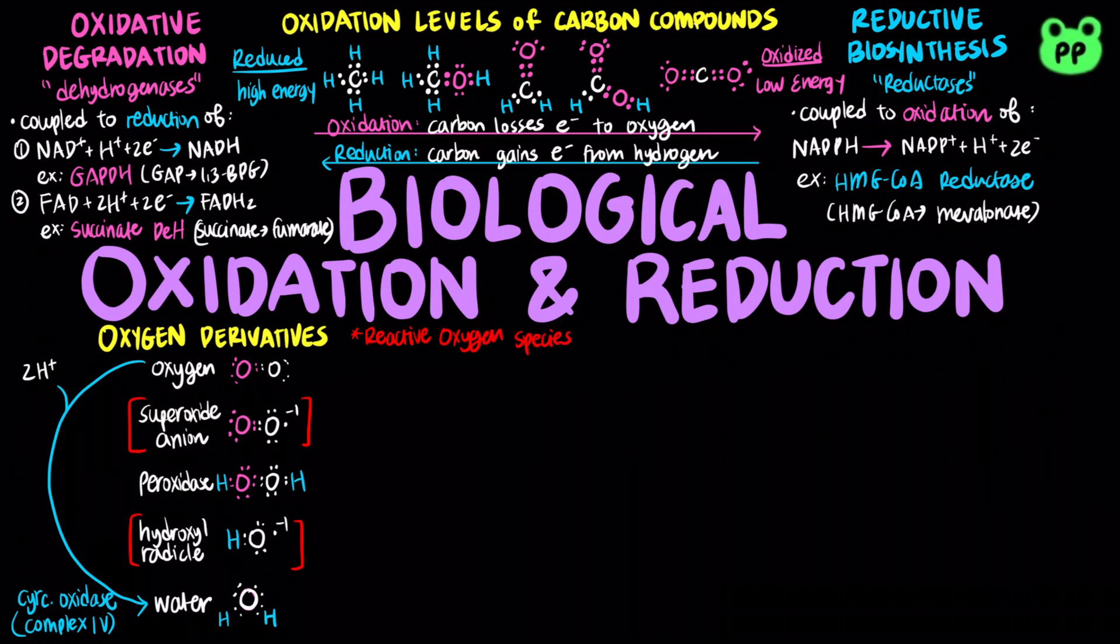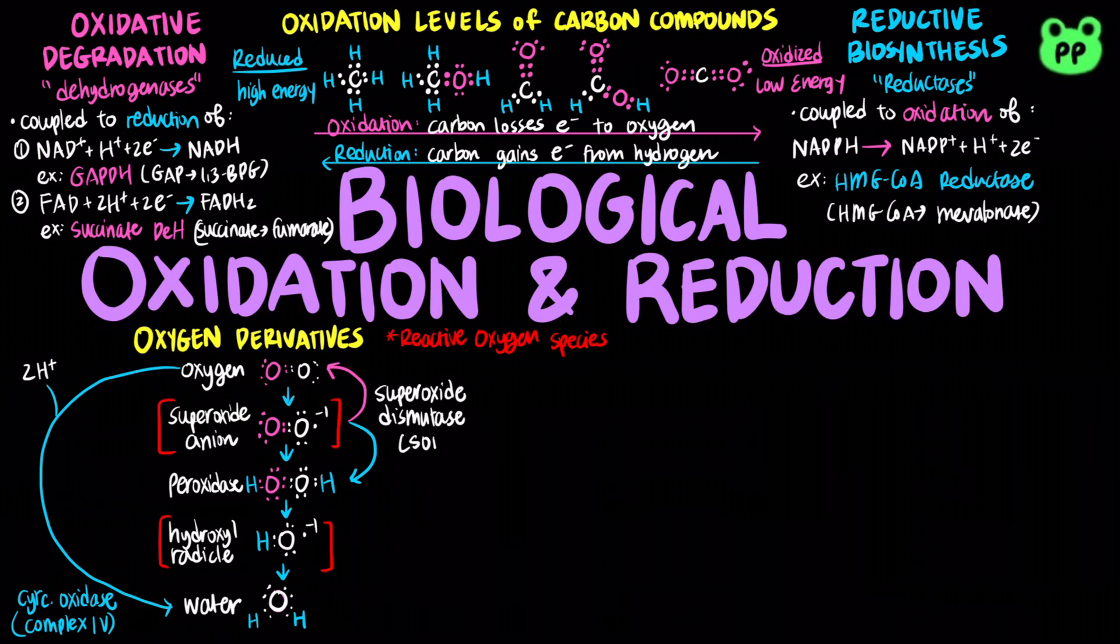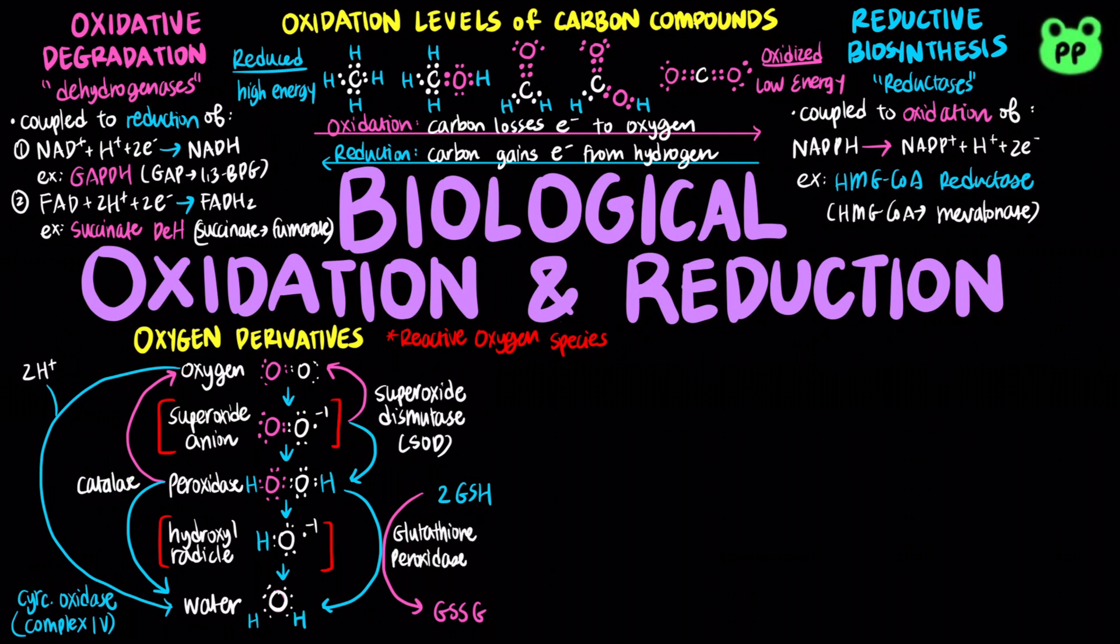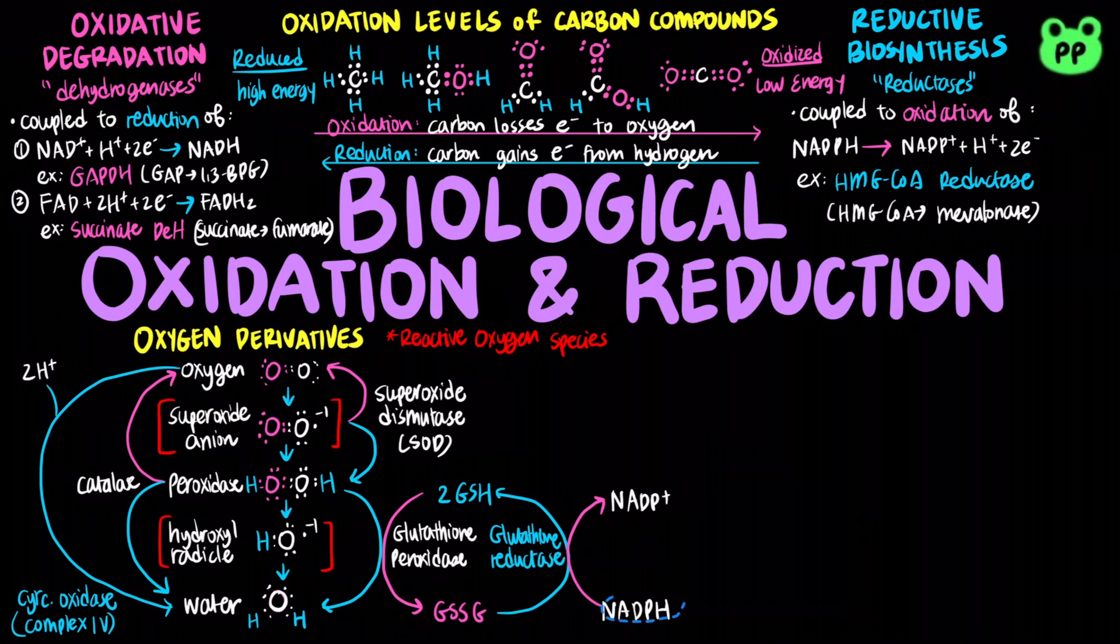During normal detoxification, superoxide dismutases can convert superoxide anion into oxygen and peroxide. Catalases can convert peroxide to oxygen and water. And glutathione peroxidases can also convert peroxide to water, which is coupled to the oxidation of glutathione. Glutathione reductases then catalyze the reduction of glutathione, which is coupled to the oxidation of NADPH to NADP+.